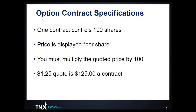Each contract controls 100 shares. Equity and exchange traded fund options are standardized, so one contract controls 100 shares. When you look at how an option contract is displayed, it's presented on a per-share basis. Because each contract controls 100 shares of the underlying security, you would need to multiply the premium being presented to you by 100. So if the contract is quoted at $1.25, when you multiply that by 100 you get $125 per contract.